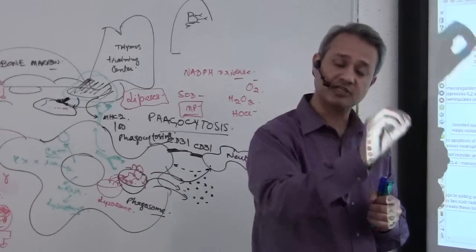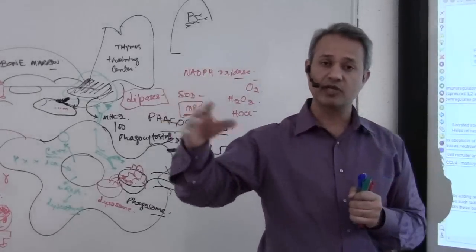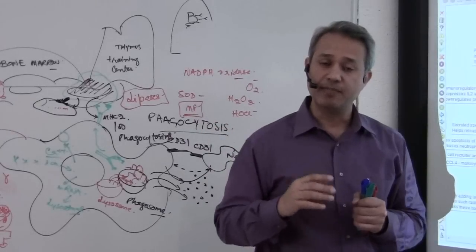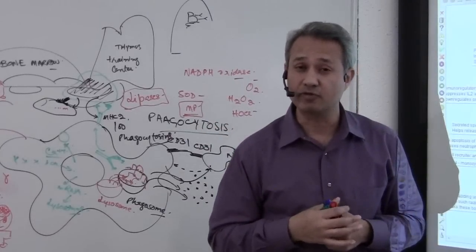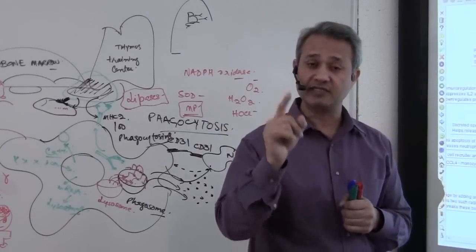That is why they say acute infections, acute inflammation, neutrophil, chronic inflammations, macrophages. Macrophages need a signal to be formed to be there. So please do not forget this.